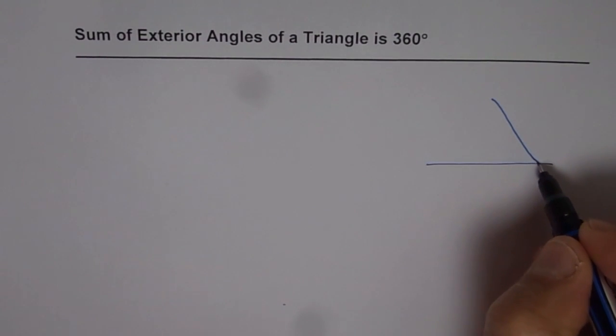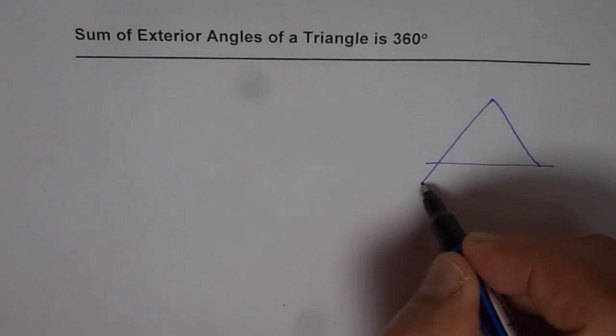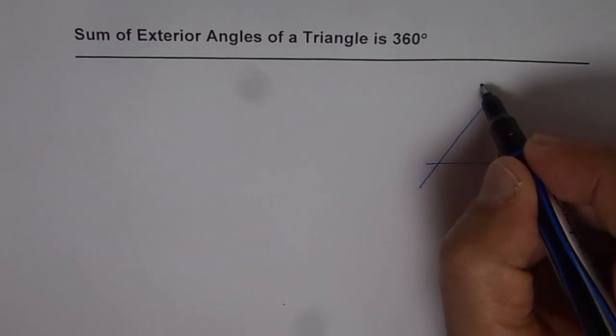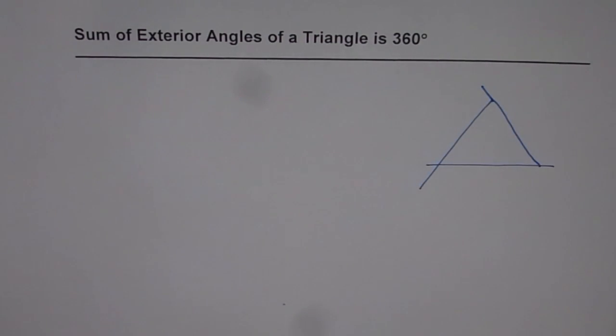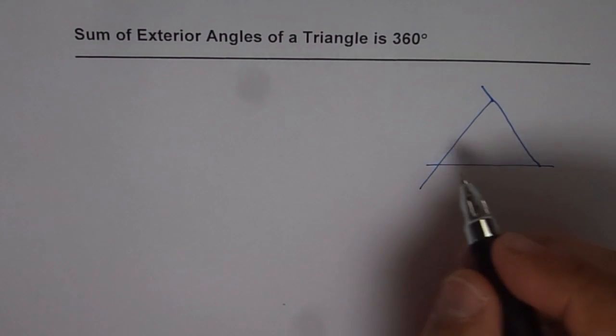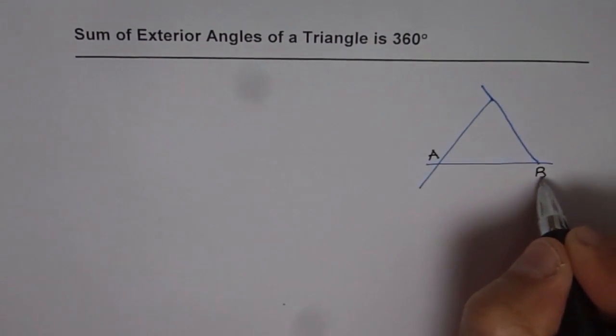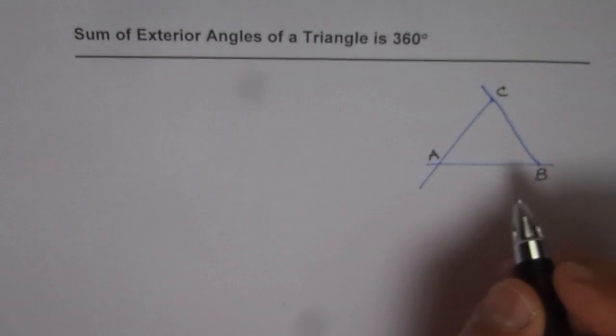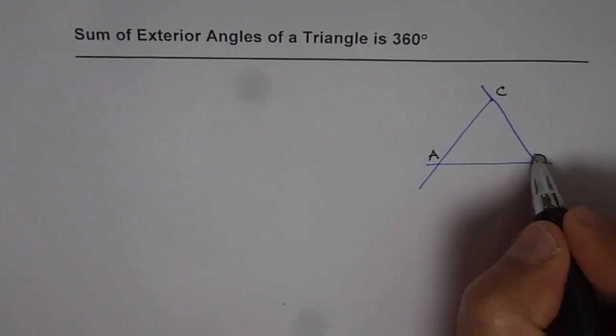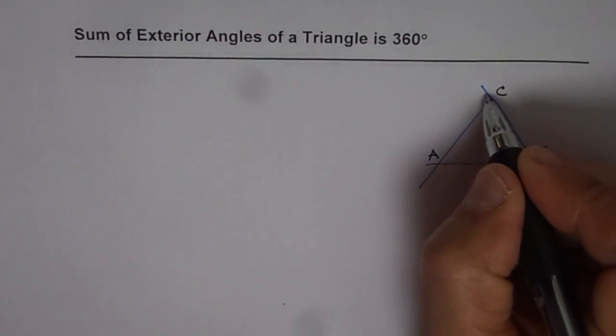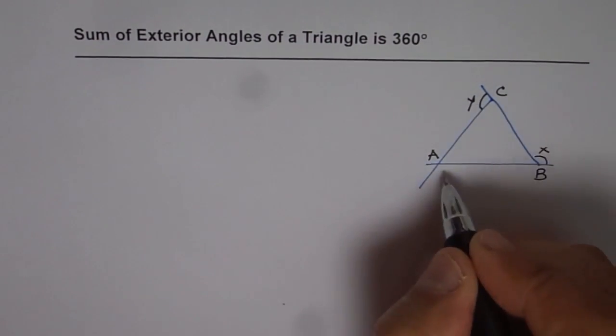So let me just construct a triangle here. Let's say this is our triangle. Let me extend this. And in this triangle we have A, B, and C as vertices, and let us consider the exterior angles as x, y, and z.